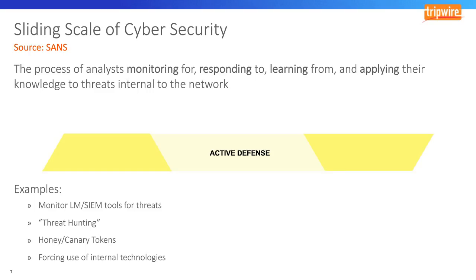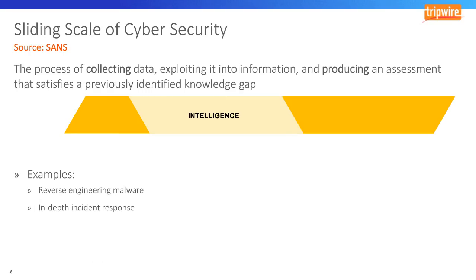This is where most organizations will stop in terms of the sliding scale of cybersecurity. The intelligence phase requires a well-funded and mature organization. It's not about consuming threat intelligence into security tools — it's about generating intelligence to share internally or externally. The goal is to collect information about the adversary, their TTPs, or their tools, and analyze that into intelligence that can be shared. Find an ISAC in a geographic region or market vertical you're in, and be sure to share your findings as well as consuming others'.